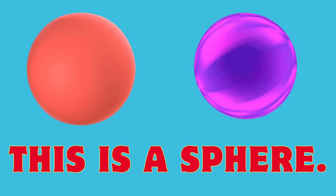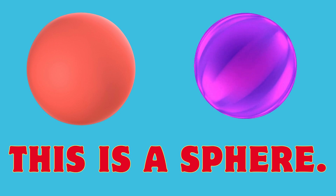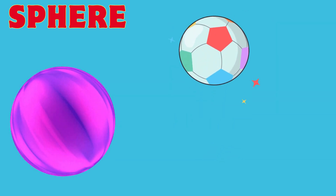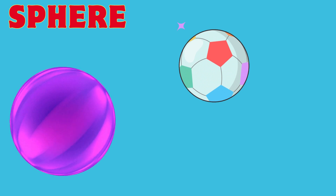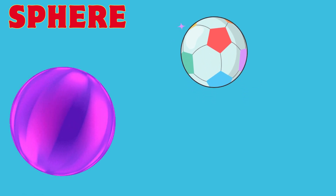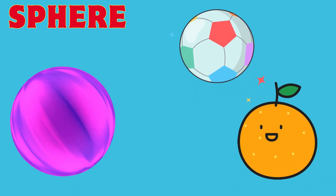What shape is it? This is a sphere. This ball is a sphere. This orange is a sphere.